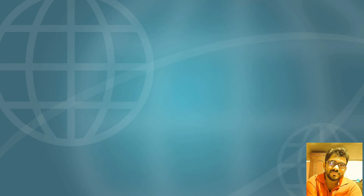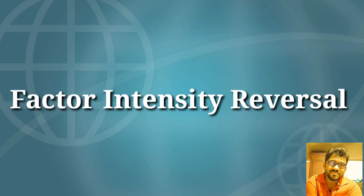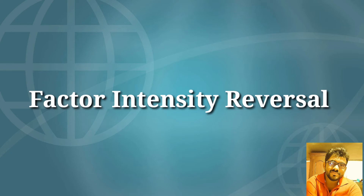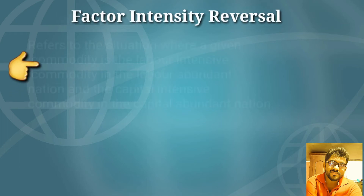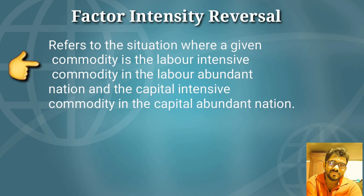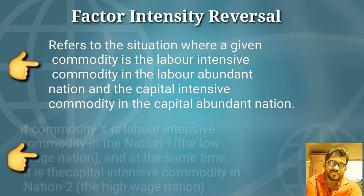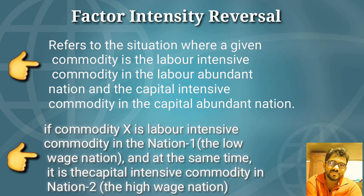Before going into the graphical illustration, let us briefly touch upon the meaning of factor intensity reversal and why and how it occurs. Factor intensity reversal refers to a situation where a particular commodity is the labor-intensive commodity in the labor-abundant nation and the capital-intensive commodity in the capital-abundant nation. For example, factor intensity reversal is present if commodity X is labor intensive in nation 1 — the low-wage nation — and at the same time it is the capital-intensive commodity in nation 2 — the high-wage nation.